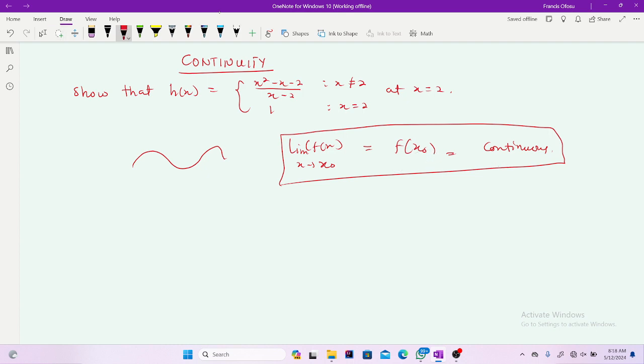When you say something is continuous, it means that if I draw a graph of my function, I don't remove the pen. I keep on drawing. It means it's continuous.